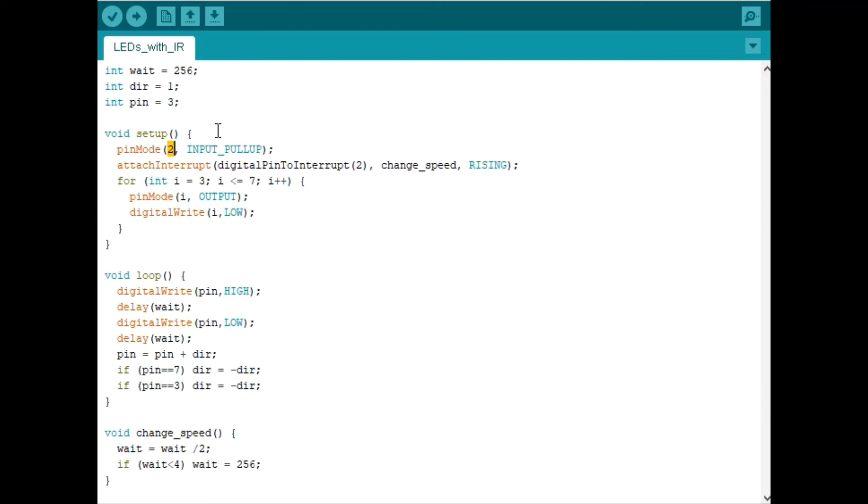Now our sensor is connected to pin 2 on the Arduino so we're going to set that pin mode to be an input and we're going to attach an interrupt to that pin, meaning that any time we detect a rising edge the subroutine change_speed will be called. And down here you'll see that any time the subroutine is called our wait time will be cut in half. If it gets too small we'll reset it to 256.